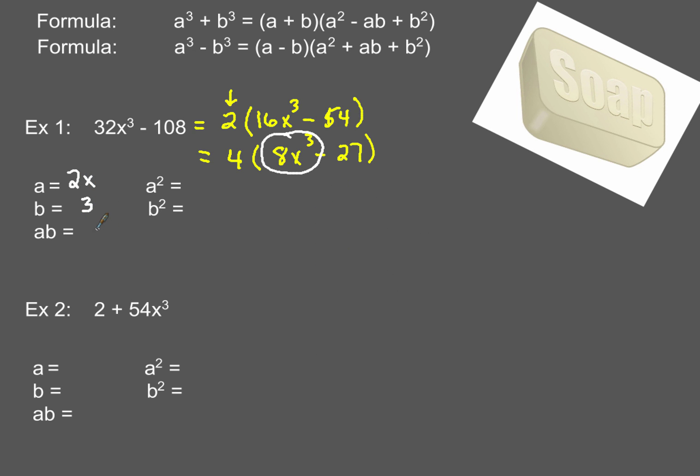So, 2x times 3, of course, is just 6x. So, you put those pieces together, and then, of course, you're going to find a squared. So, when you have 2x, and you square that, that's going to give you 4x squared. b squared, of course, will be 3 squared, which is 9. So, we've got all the pieces that we need.